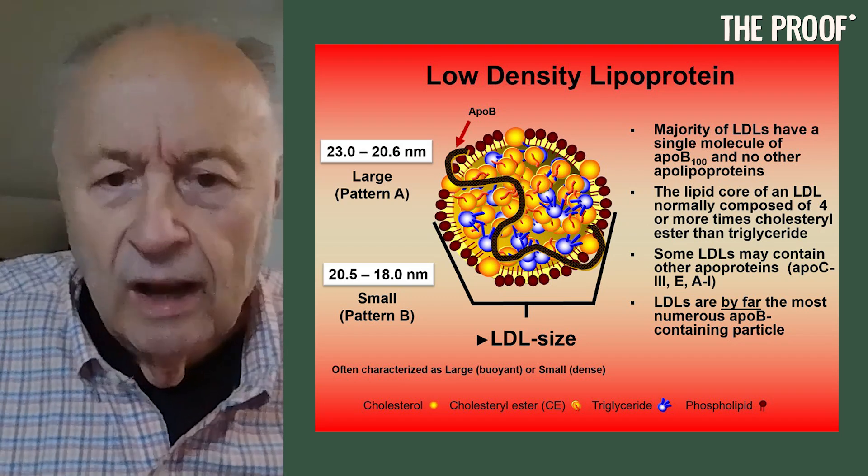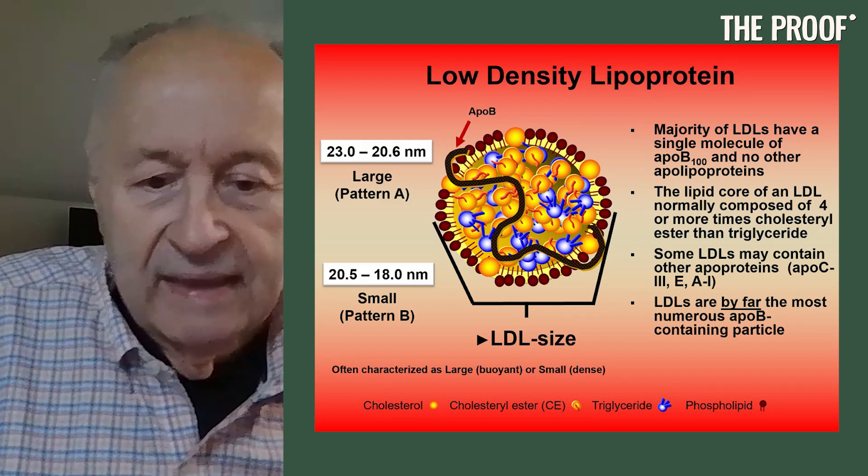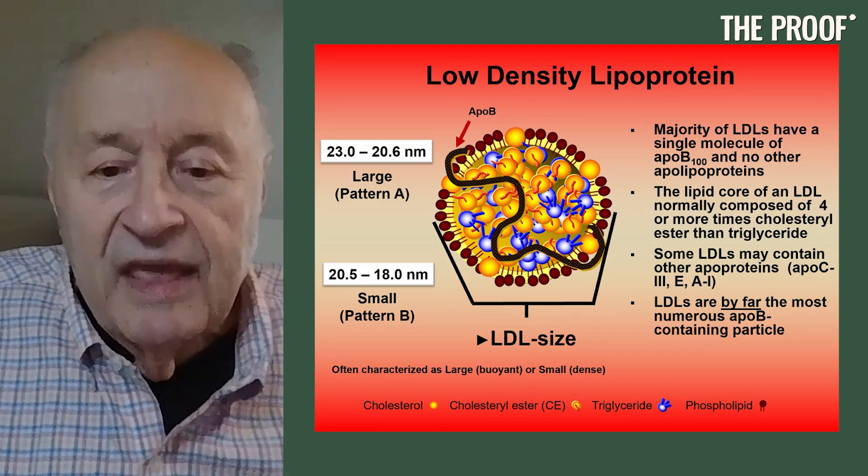LDLs are actually a heterogeneous family of lipoproteins within a certain density range. They vary by their diameter and a little by their core composition — so you have small LDLs, intermediate size, and big LDLs. Within the LDL family, an LDL is simply a lipoprotein with one molecule of ApoB on it, so it's LP-ApoB. That is the shorthand signature for an LDL particle. But they not only vary by size, buoyancy, and composition — there's a different sort of member of the LDL family, and this is what lipoprotein little a is.